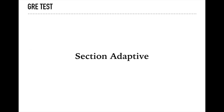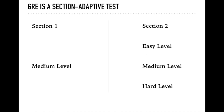The GRE test is a section-adaptive test, which basically means that the first section is always a medium-level section. Each section will have 20 questions, so the first section is medium no matter how good or bad you are in math. If you perform well, the next section — section 2 — can be easy, medium, or hard based on how you perform in the first section.